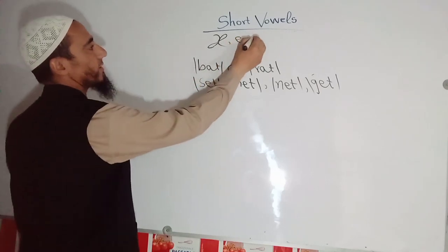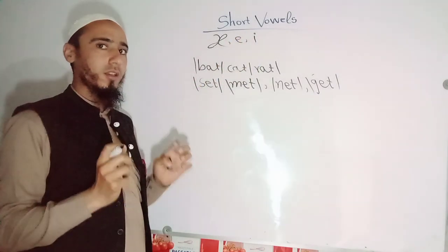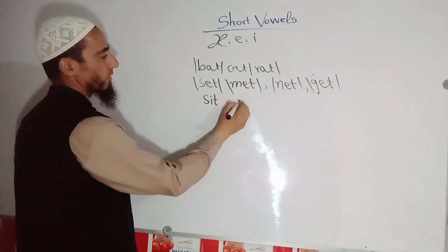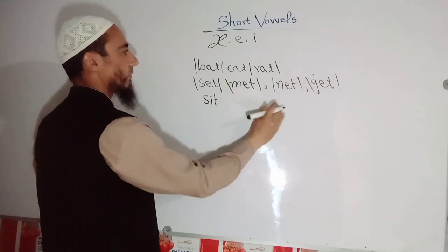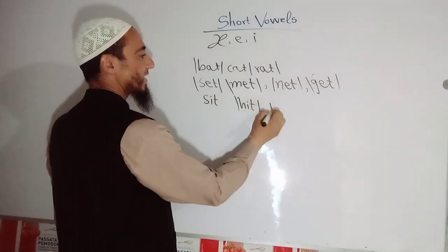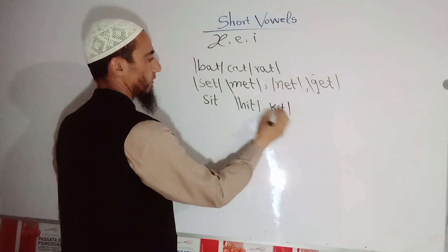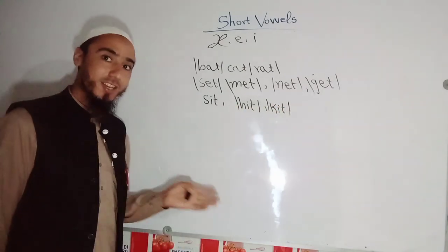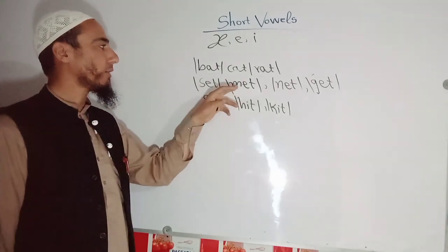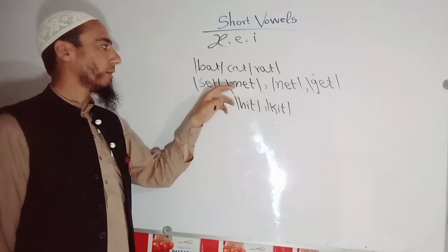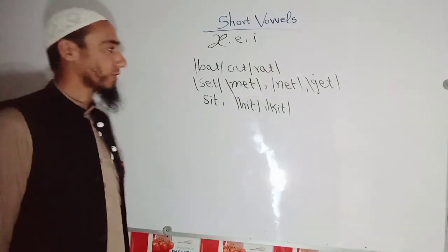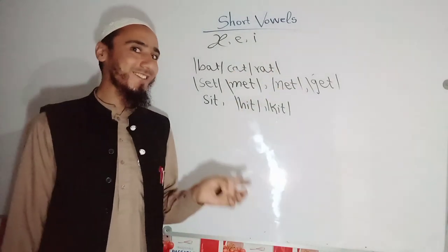Another symbol is /ɪ/ — the 'i' sound, very short. For example: sit, hit, and kit. Now listen to the difference: this is 'set' and this is 'sit'. Set — sit. Met — hit. Get — net. Be careful about that distinction.